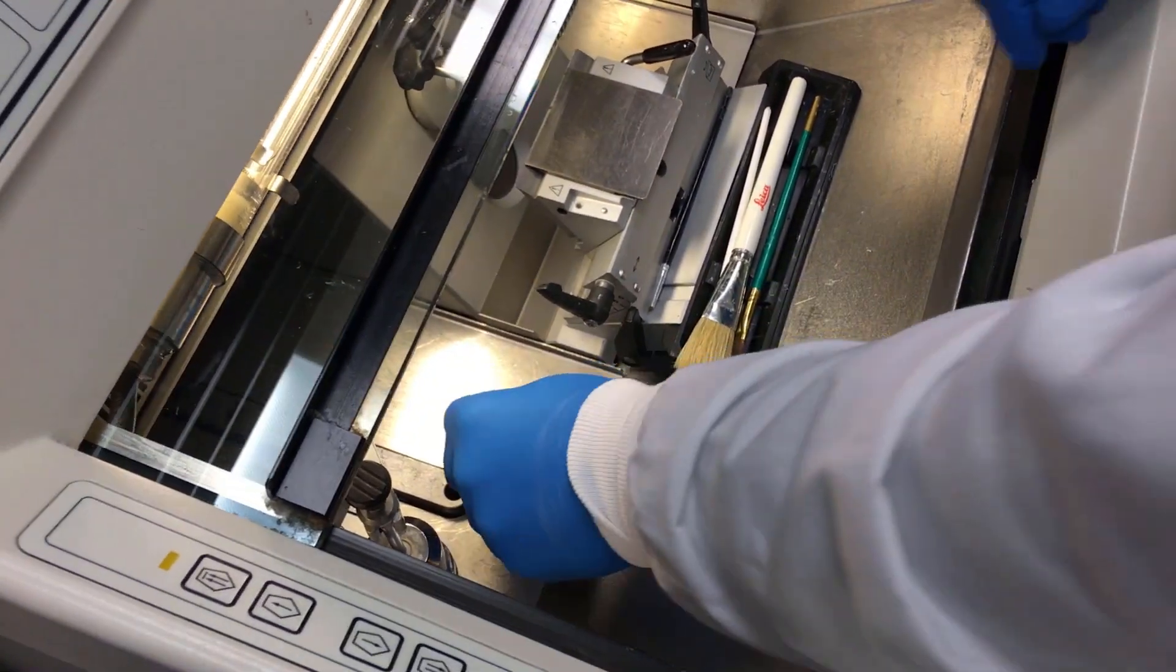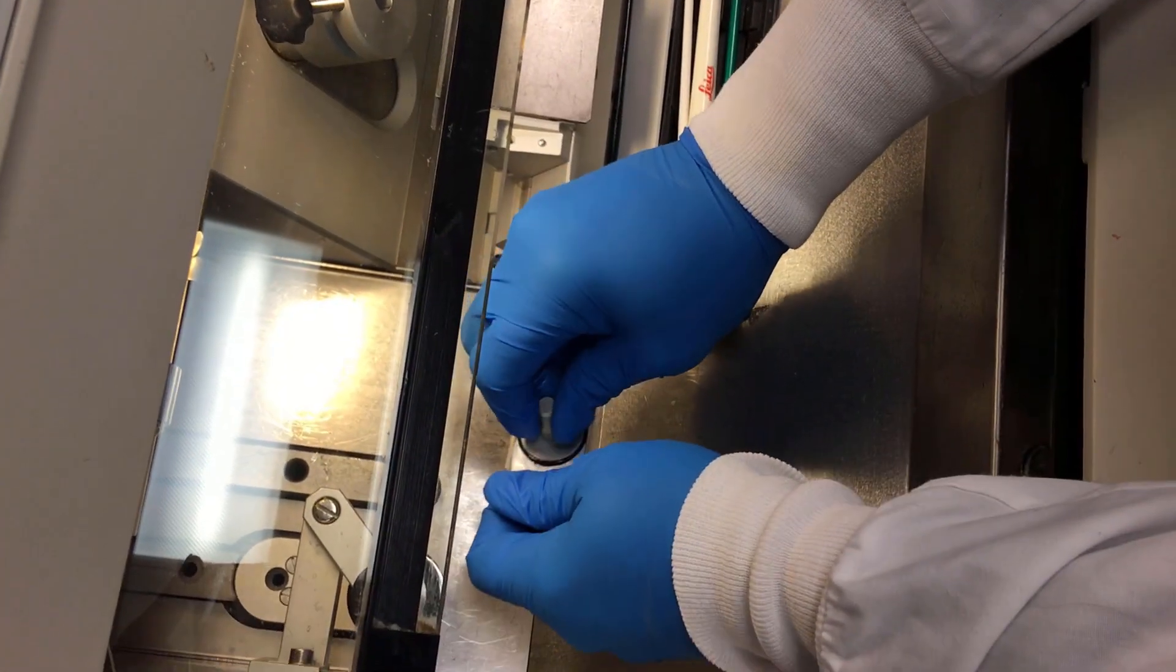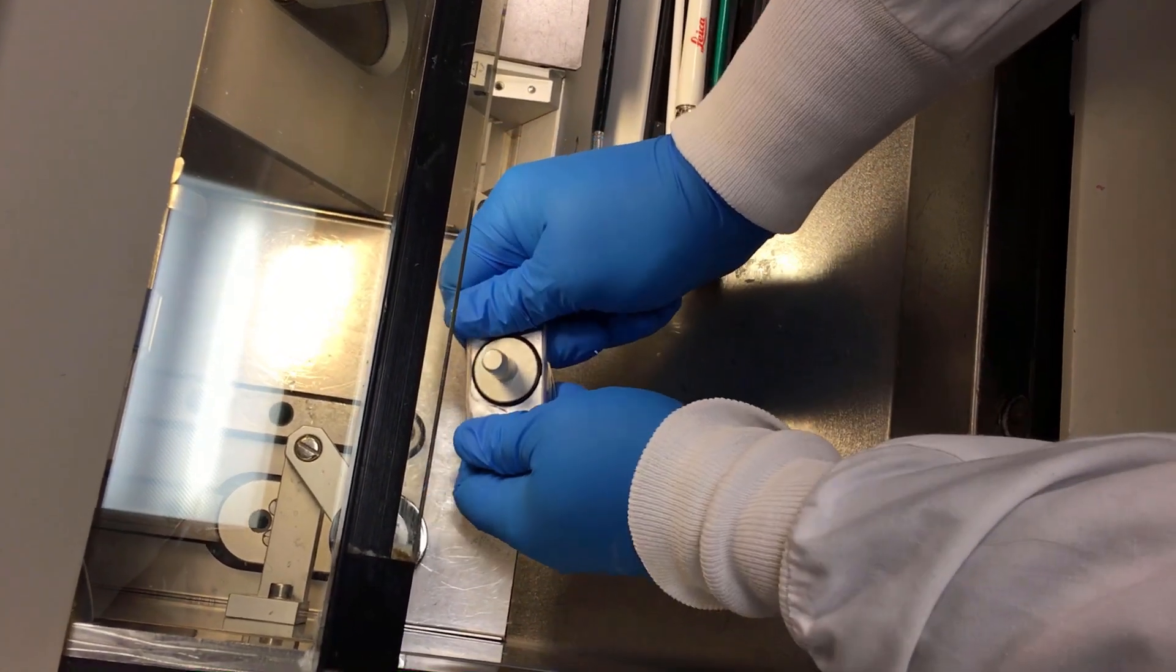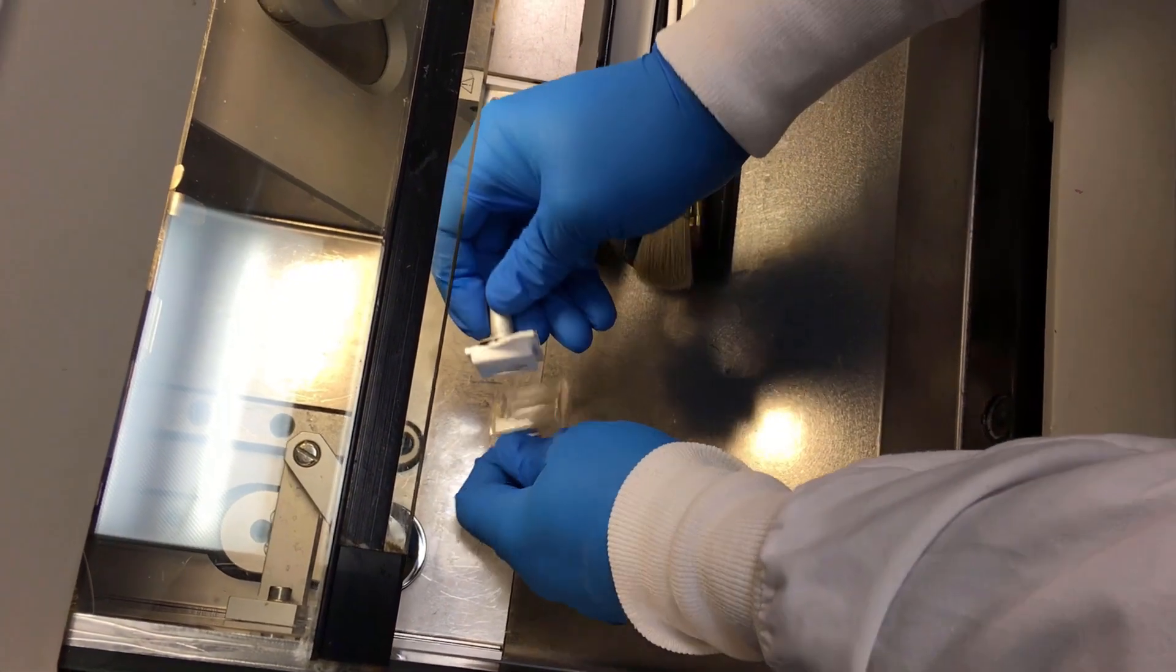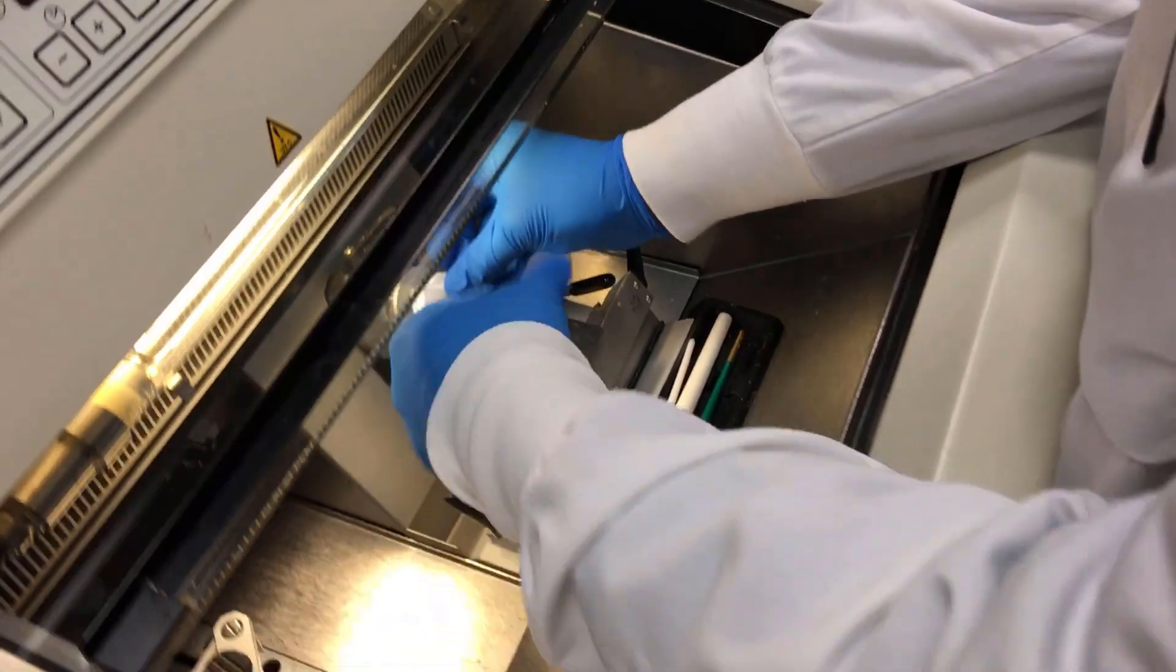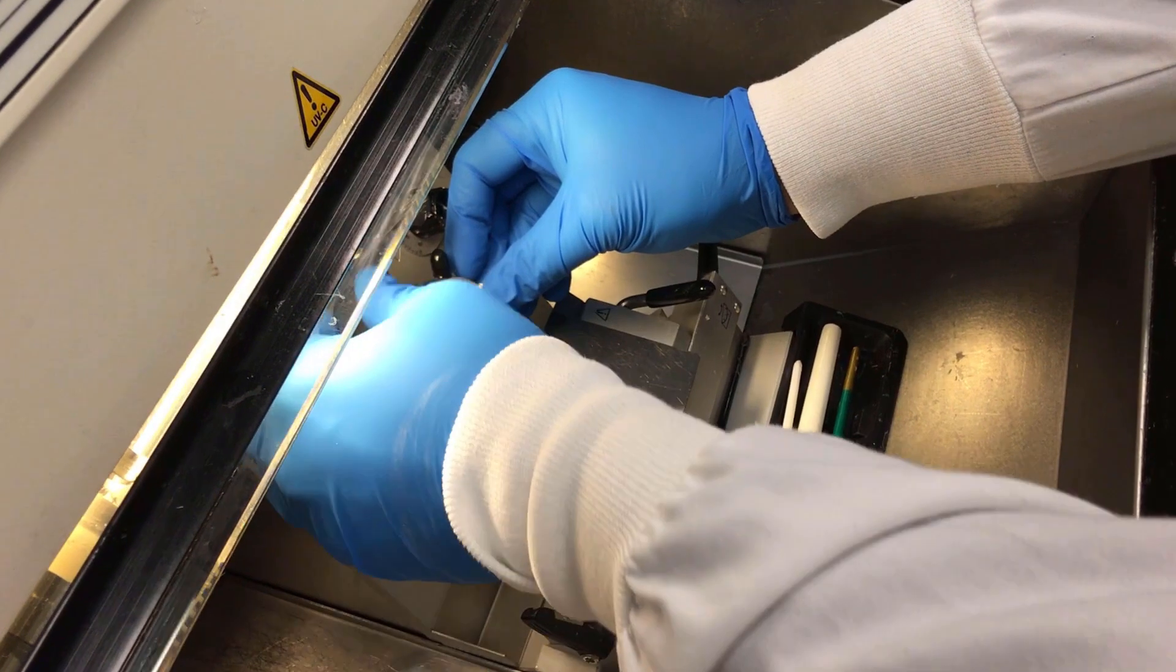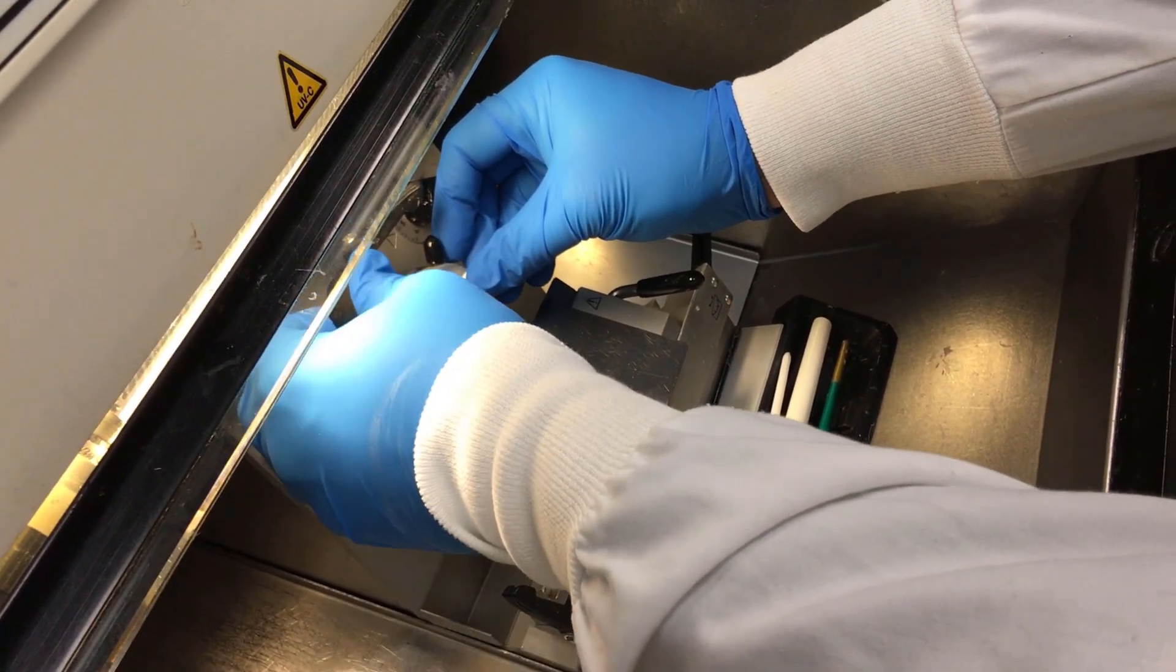To get the block out, grab the sides of the mold and give it a slight soft twist. The block should easily pop out. Now place the block into the chuck with the orientation that you set up while grossing the specimen. Ensure everything is tight.